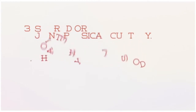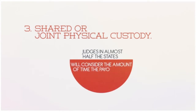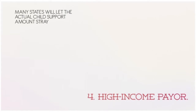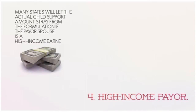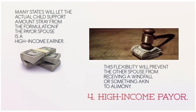3. Shared or Joint Physical Custody. Judges in almost half the states will consider the amount of time the payer spouse has the children in his or her care. 4. High Income Payer. Many states will let the actual child support amount stray from the formulation if the payer spouse is a high income earner. This flexibility will prevent the other spouse from receiving a windfall or something akin to alimony.